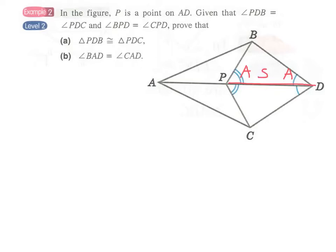Therefore, we have the condition ASA. This is one of the congruent triangle conditions. And now we can write down the answer for part A first.